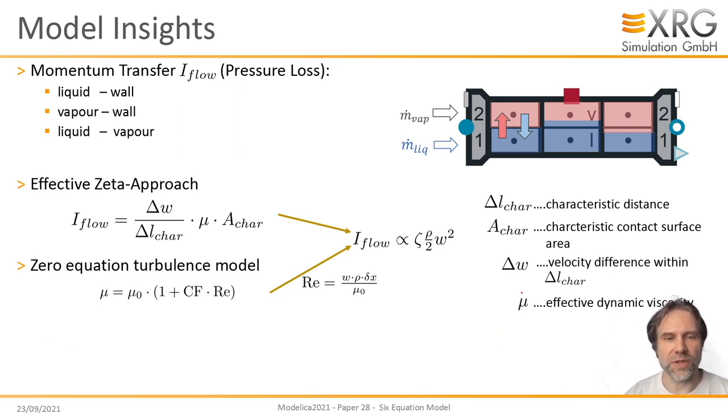Additionally, we realized that it's an advantage numerically to go with a zero-equation turbulence model. That means in order to compute the momentum transfer or the pressure loss between liquid wall, vapor wall, and the interaction between the phases, you would compute an effective dynamic viscosity for every phase that is corrected by the Reynolds number.